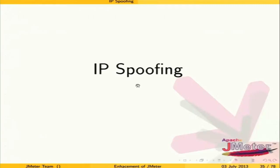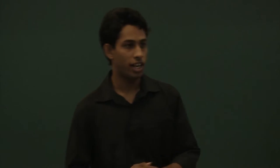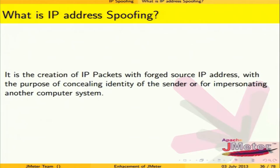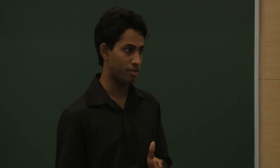IP spoofing is the concealing of a user's identity or impersonating another computer system, used in JMeter testing. When running a test plan in JMeter, even for thousands of users, the same IP address is recorded on the server side. If an application is IP-dependent, the test fails because all users share one IP, which doesn't match real-world scenarios.